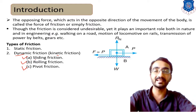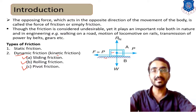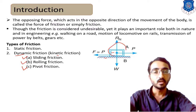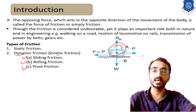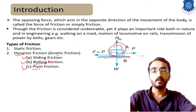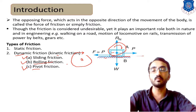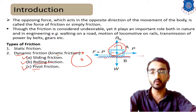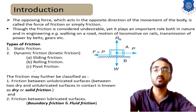In sliding friction, the motion between the body and surface is of sliding type. In rolling friction, the body rolls over the surface — for example, a circular wheel rolling on a flat surface produces rolling friction. Pivot friction occurs when a body rotates about a fixed center; the friction generated by that rotation is known as pivot friction.